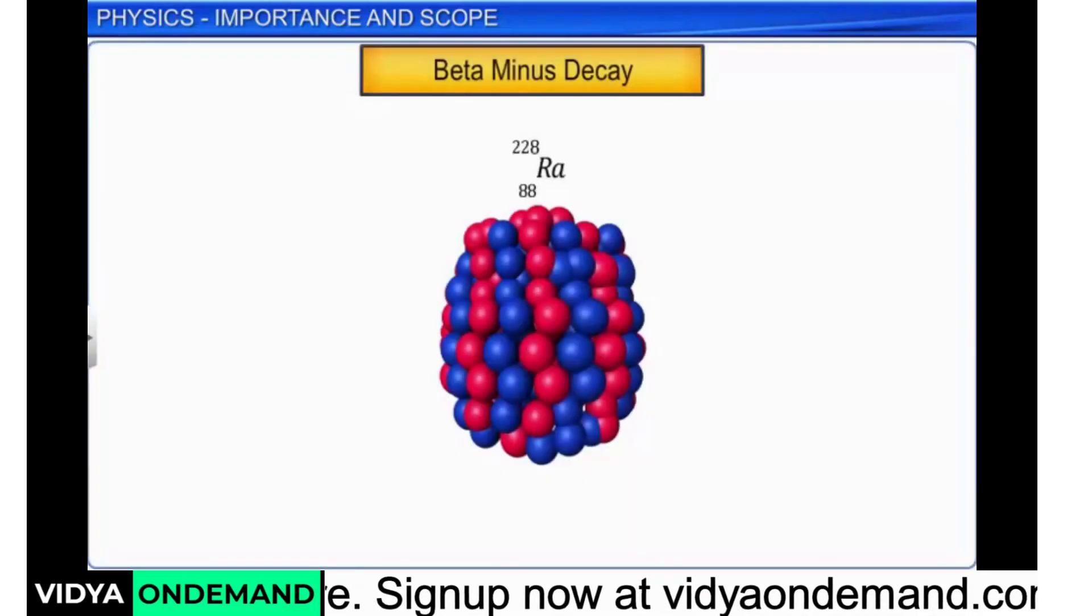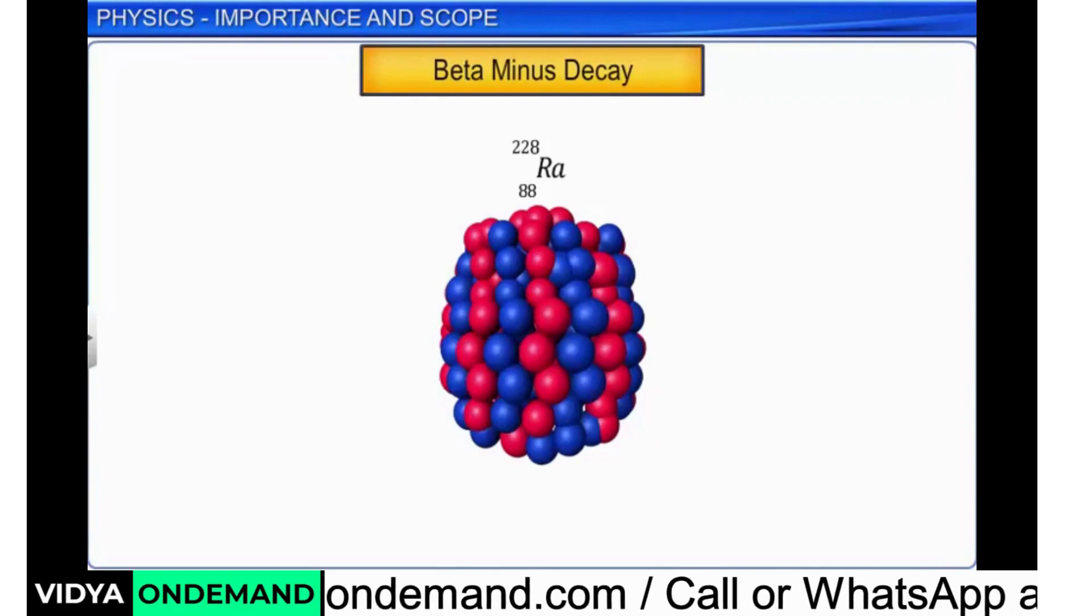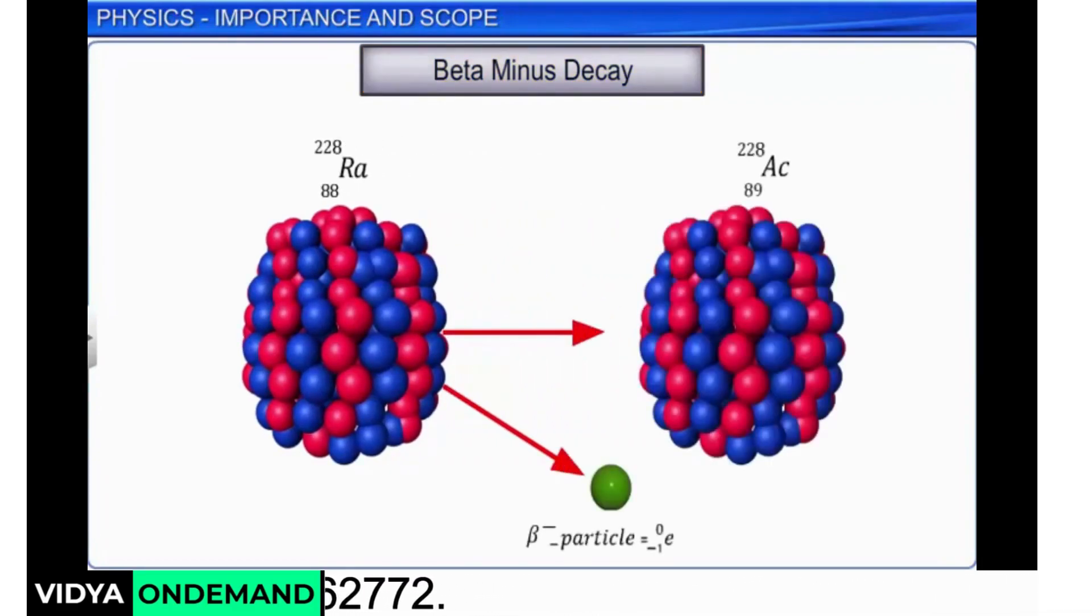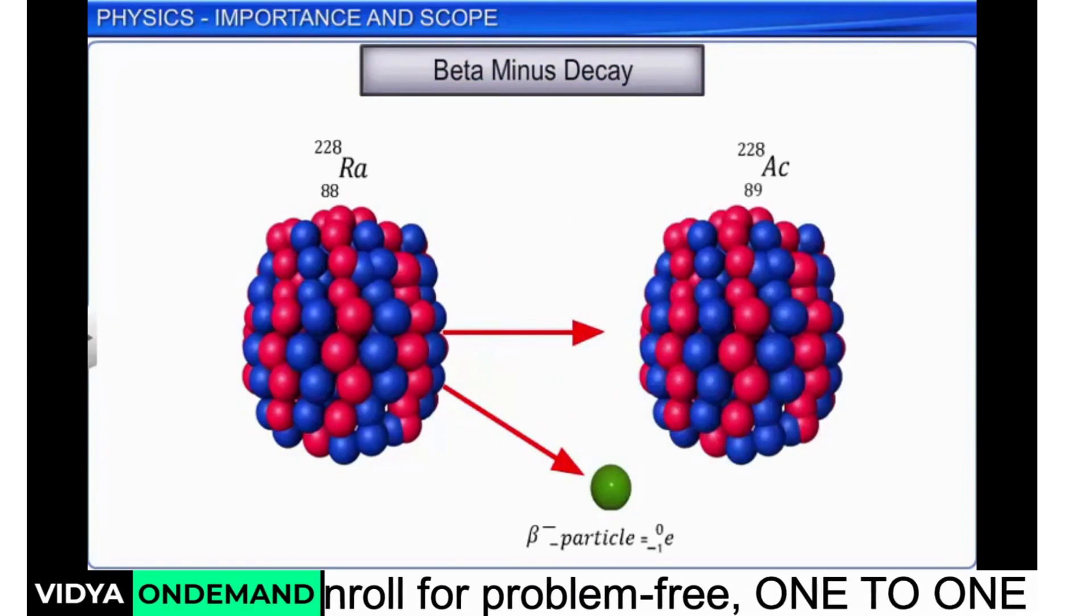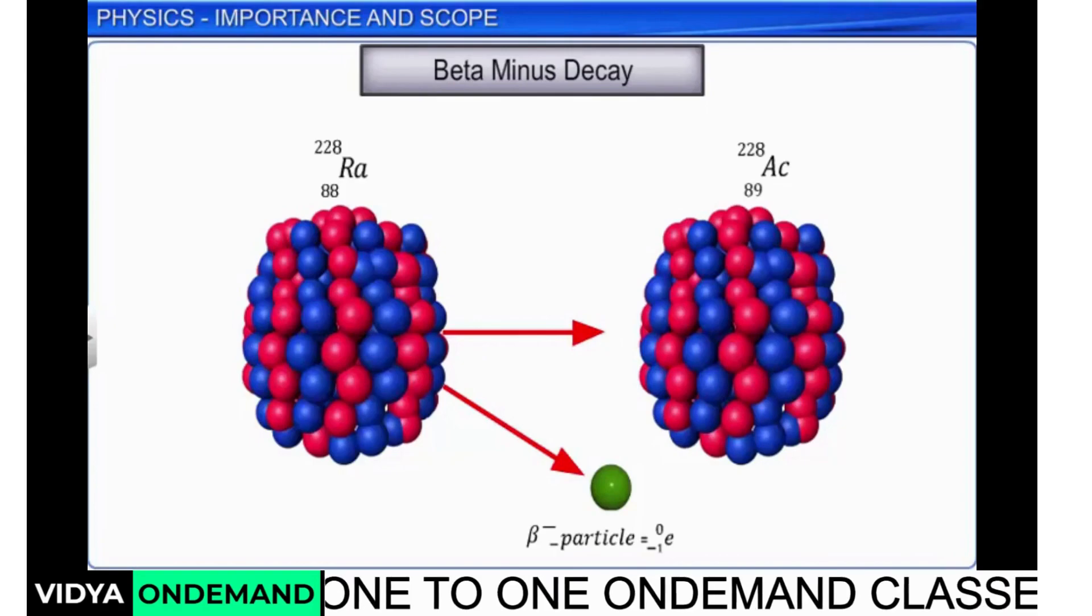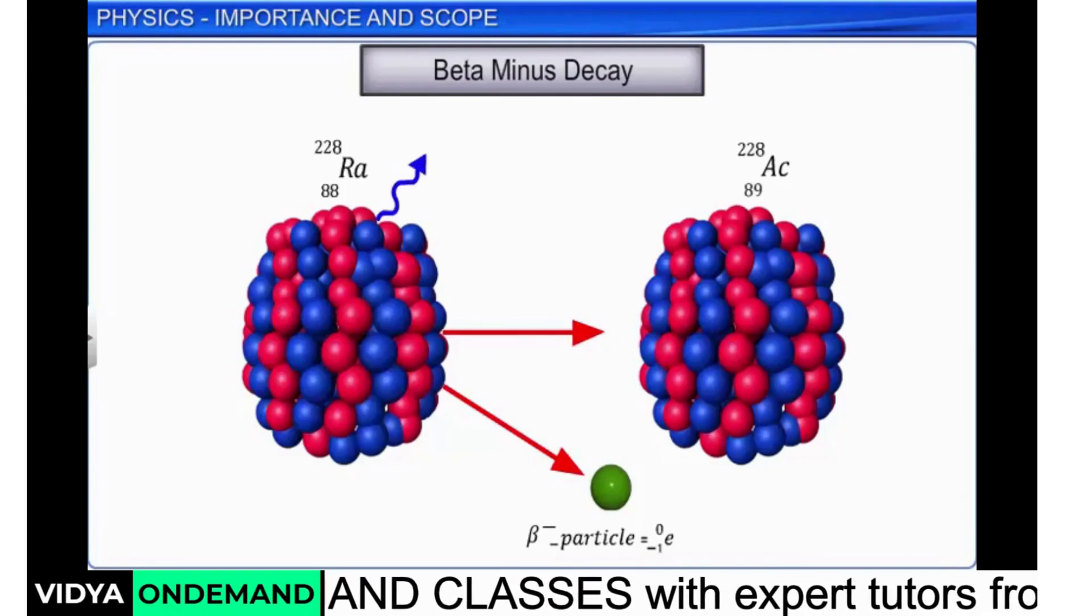Weak nuclear force comes into existence in case of beta decay of a nucleus. In beta decay, the nucleus emits an electron and an uncharged particle called neutrino.